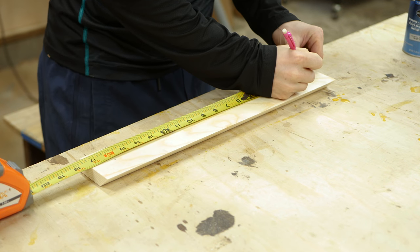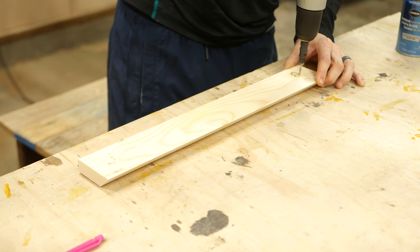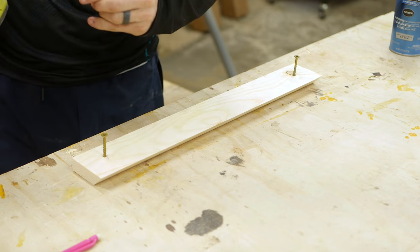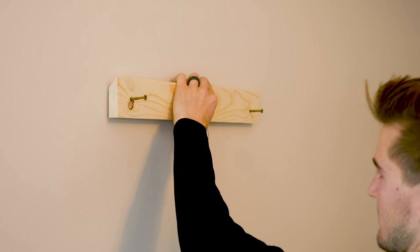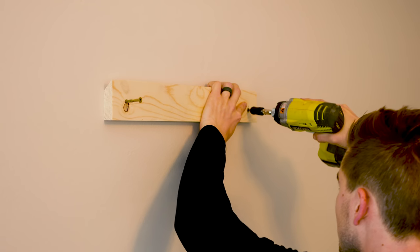The last thing to do was to hang it. So this was as simple as locating the studs in my walls which were 16 inches on center, drilling pilot holes in the wall cleat, pre-drilling screws into the piece, and then drilling that cleat into the wall, making sure it was level in the process.